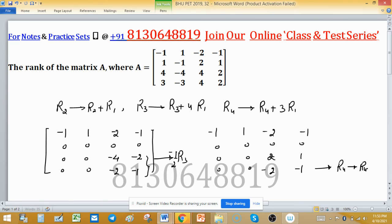So this row becomes 0 and this is also 0. So there are only two nonzero rows you got. So rank of this matrix is 2.